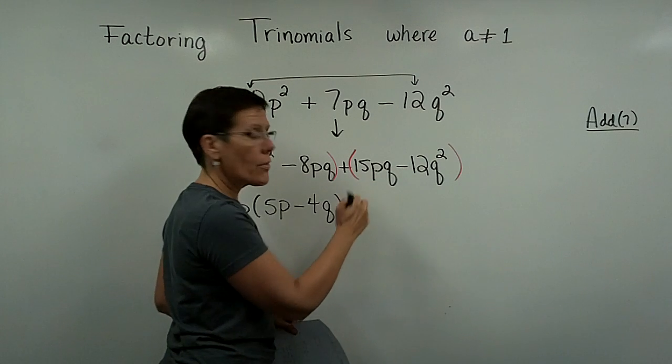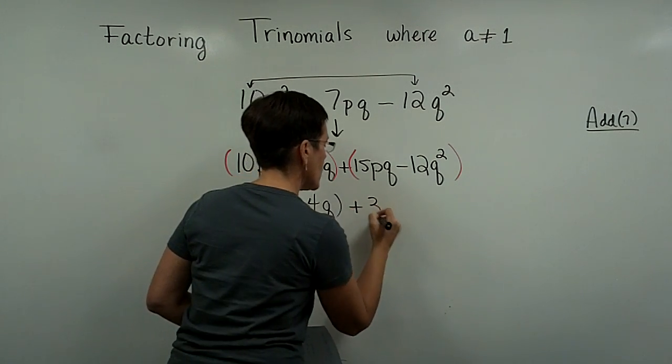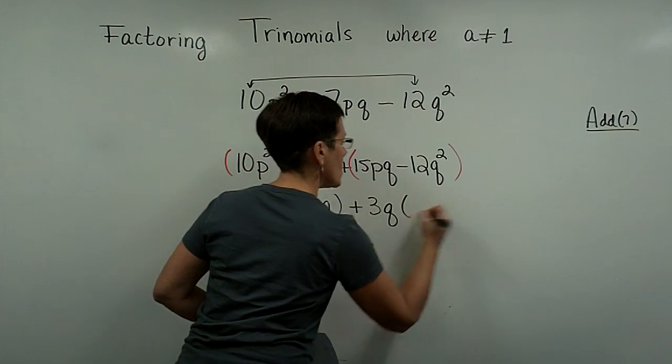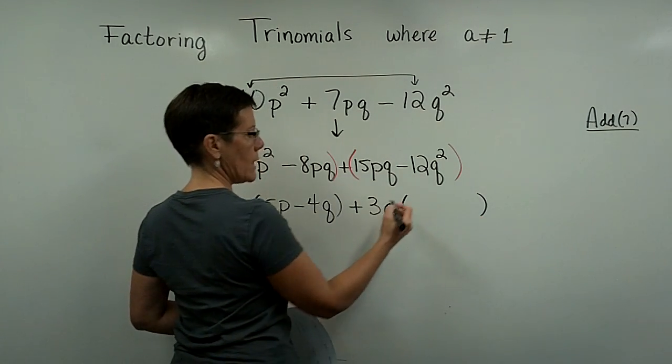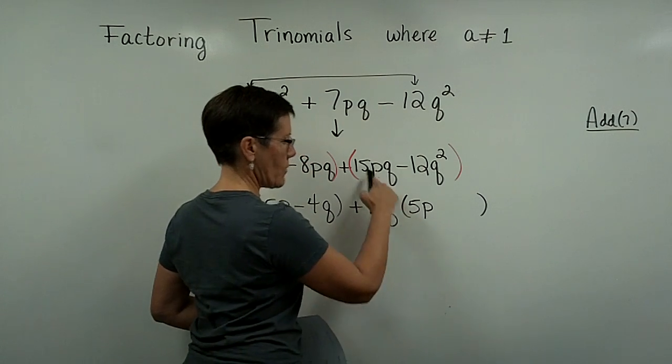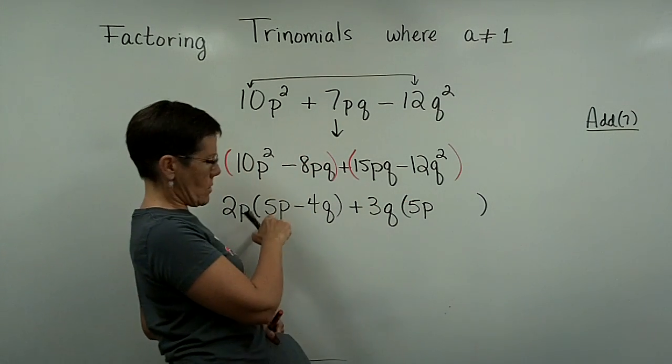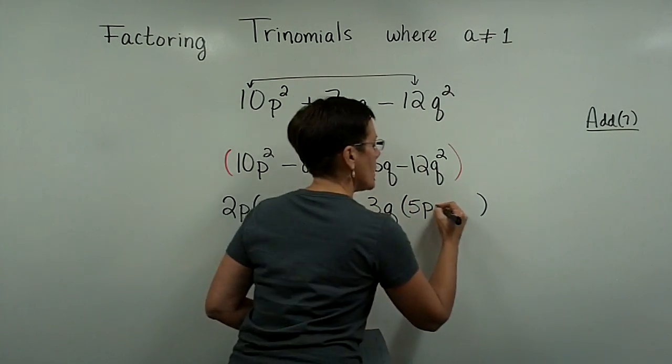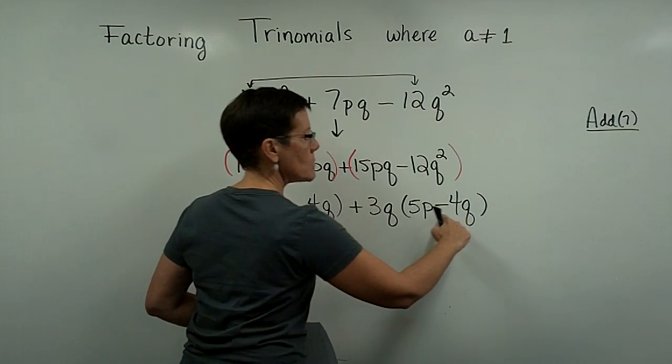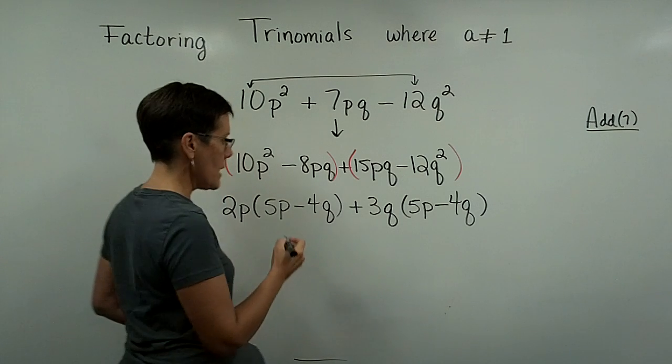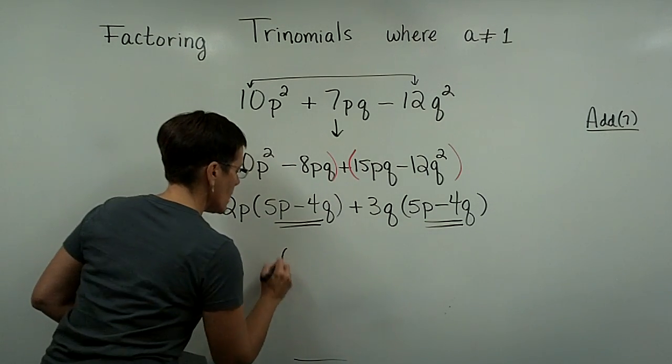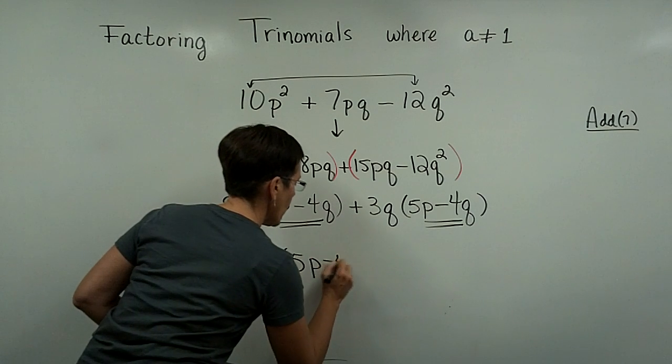And then I'm going to look at those. A 3 looks like it comes out of each of those, and it looks like a q comes out of each of those. So I'm going to factor out a 3q. And what I do, I'm going to need a 5p right here, because 3q times 5p is 15pq. I'm going to peek over here. Oh good, that's looking good. And then I'm going to need a minus 4q here, because 3q times a minus 4q is a minus 12q squared. And I'm again going to peek here and say, oh yay, those match. And so I'm going to put them in one binomial.